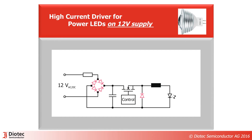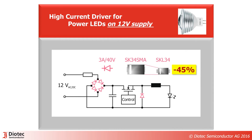Lamp drivers for 12V AC or DC supply are using a step-down converter, as shown in this slide. A 3A 40V Schottky is suitable both for the input bridge as well as the freewheeling diode at the output. A state-of-the-art device is the SK34SMA. The new SKL34 in the smaller SOD123 package saves 45% of board space.